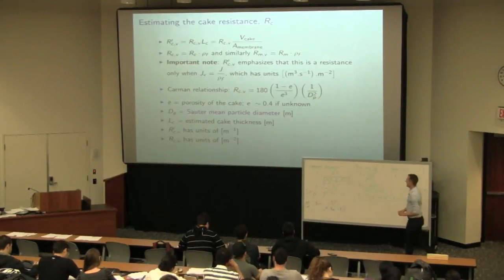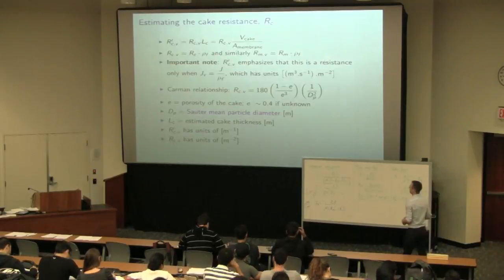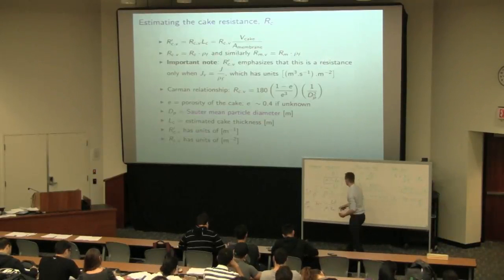So we just rename those two resistances in the denominator with this common V to emphasize the fact that these are now resistances when the flux J is expressed in volumetric form.